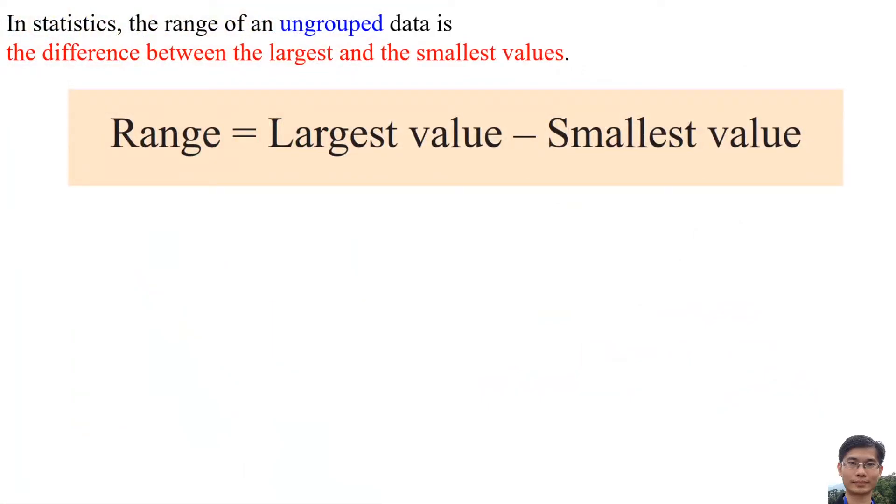In statistics, the range of an ungrouped data is the difference between the largest and the smallest value. Range equals largest value minus smallest value.